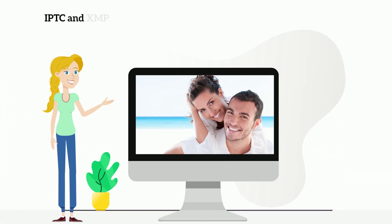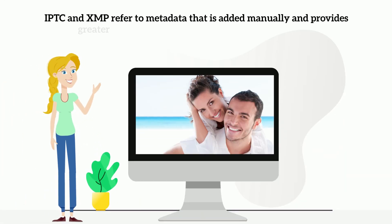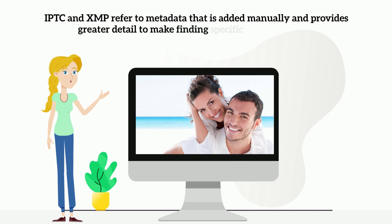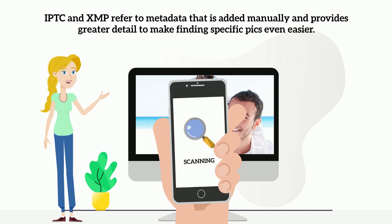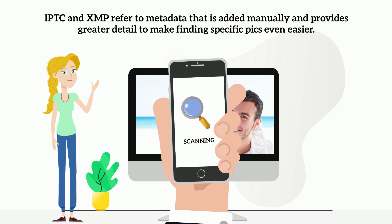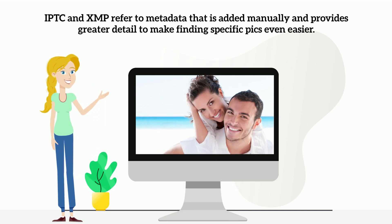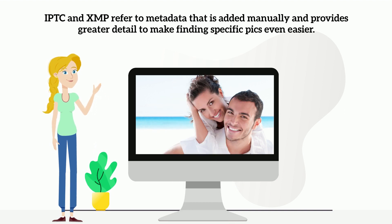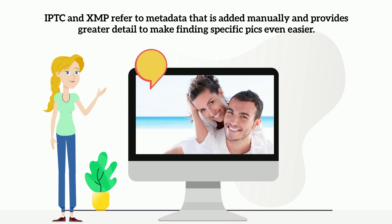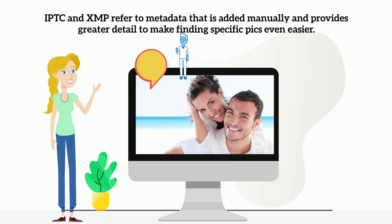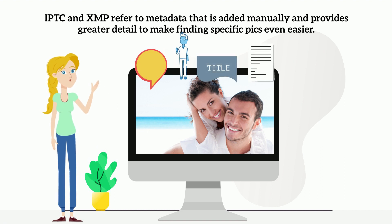IPTC and XMP refer to metadata that is added manually and provides greater detail to make finding specific photos even easier. Four important metadata fields are keywords, people, title or captions, and description.